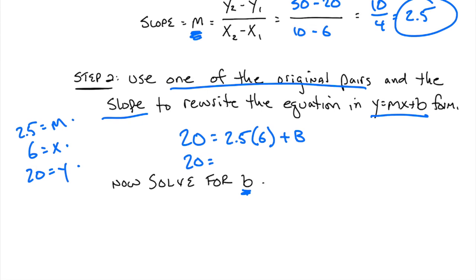So I have 20 equals, 2.5 times 6. That's 12. And half of 6 is 3. And 12 and 3 is 15. So 15 plus b. So 15 plus what? We're going to subtract 15 from both sides and we're going to get b equals 5.